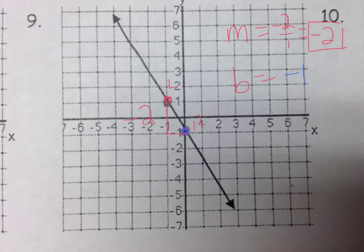So when we go to write our equation, y equals, instead of m, it's -2x. Instead of plus b, it's minus 1, so we get y = -2x - 1.